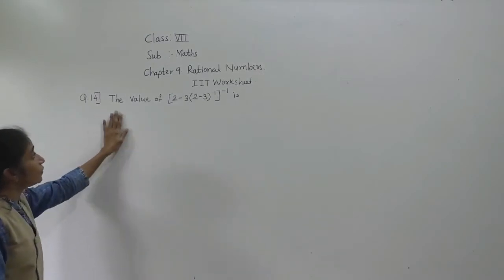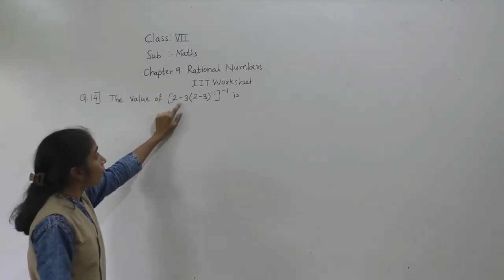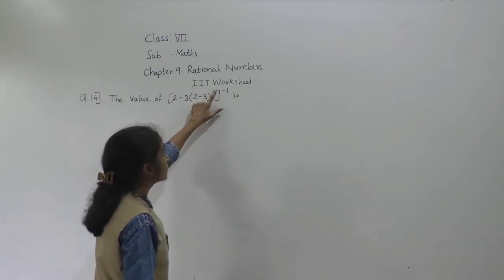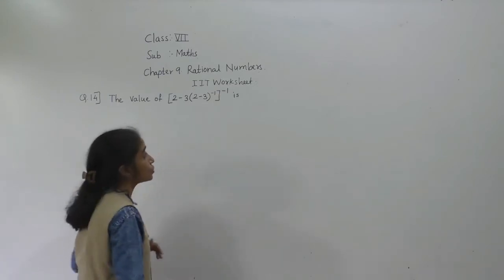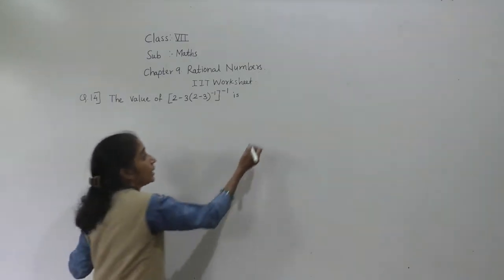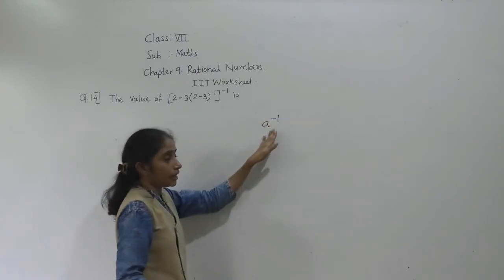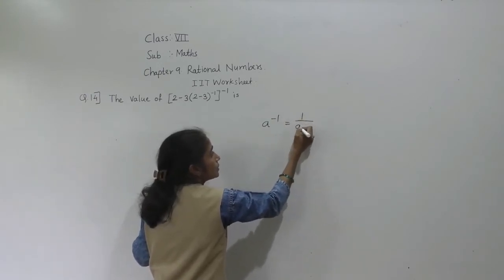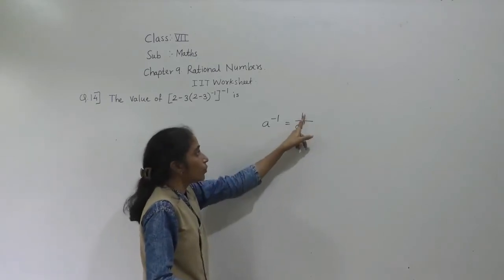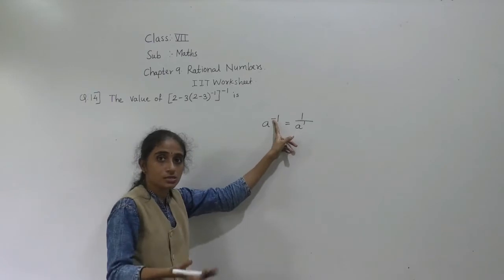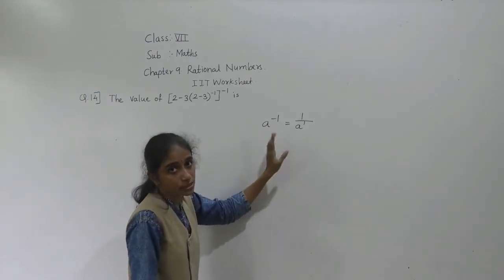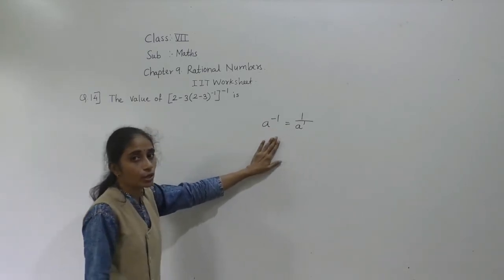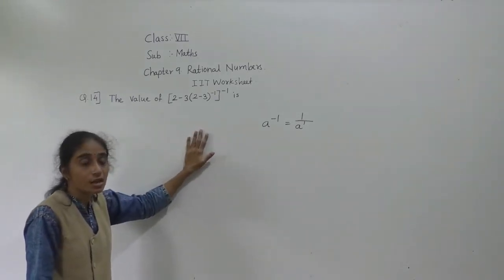Let's solve question number 14. The value of: in bracket [2 minus 3 into round bracket (2 minus 3)] raised to minus 1, and it is raised to minus 1. First you should know: any number A raised to minus 1 equals 1 upon A raised to 1. You will learn this rule in exponents and powers.